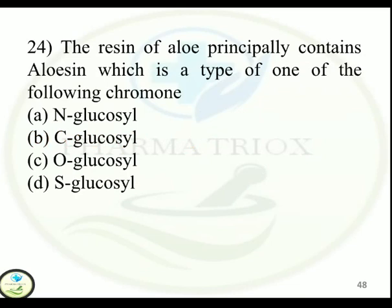Question 24: The resin of aloe principally contains aloesine, which is a type of one of the following chromones — Option A: N-glucosyl. Option B: C-glucosyl. Option C: O-glucosyl. Option D: S-glucosyl. Correct answer is Option B — C-glucosyl.